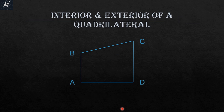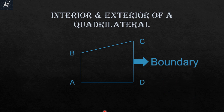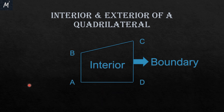Interior and exterior of a quadrilateral. All four sides together make the boundary of the quadrilateral. The inside portion of the quadrilateral is called the interior, and the outside is called the exterior of the quadrilateral.